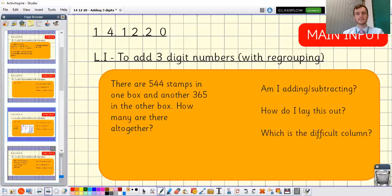Let's look at another example together. This one's a word problem. And it says there are 544 stamps in one box. And another 365 in the other box. How many are there all together? Now we know this is probably going to be an addition question because we're adding today and that's our focus. How do we know for sure this word problem involves adding? What words perhaps tell you that? Have a think about that. And again have a think about how I lay this out or how we will lay this out and what's the difficult column here.